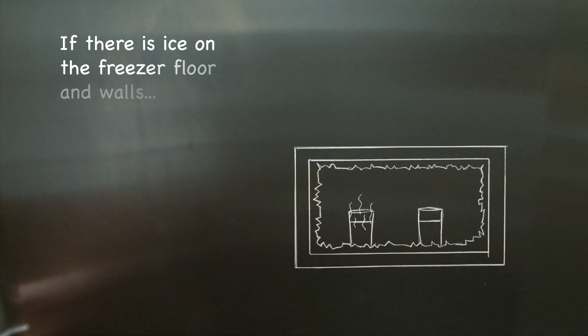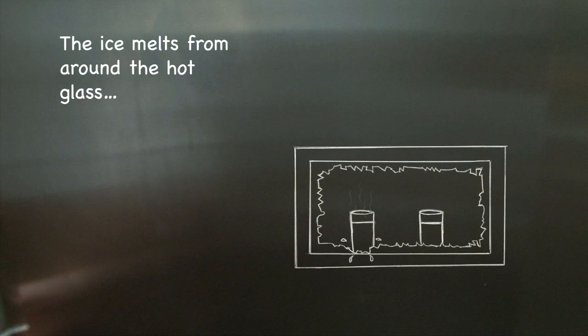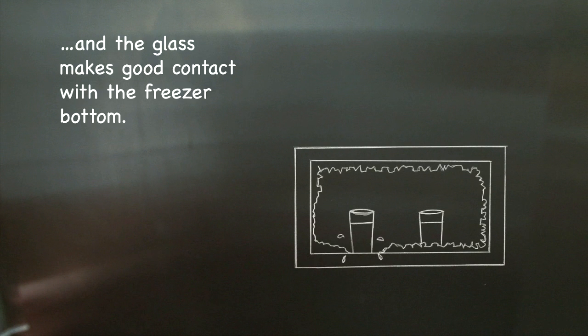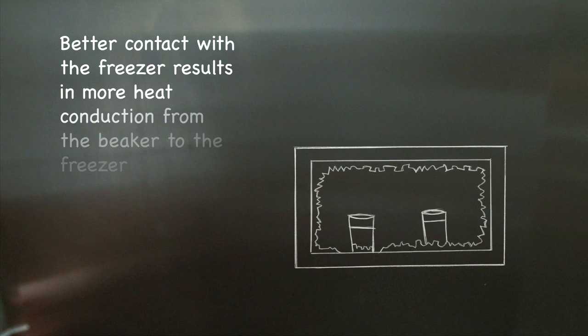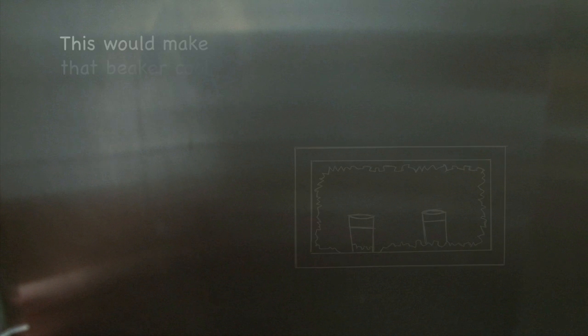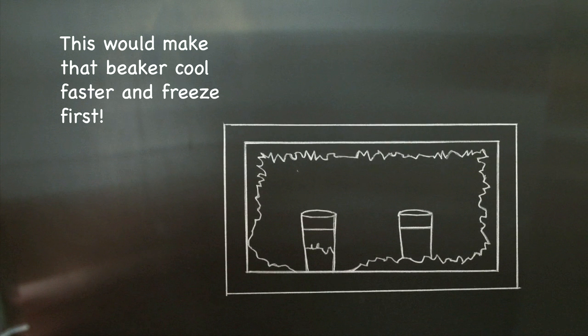If there is ice on the freezer floor and walls, the ice melts from around the hot glass and the glass makes good contact with the freezer bottom. Better contact with the freezer results in more heat conduction from the glass to the freezer. The water cools quicker where the glass is touching the freezer bottom. This will make the hot one cool faster and freeze first.